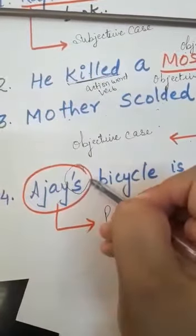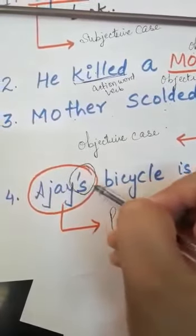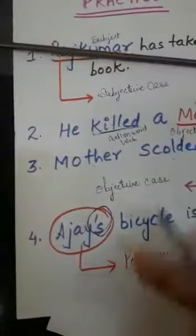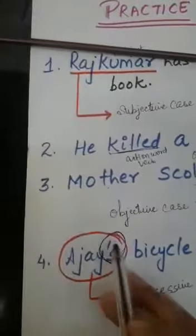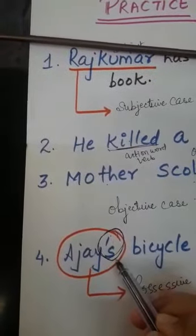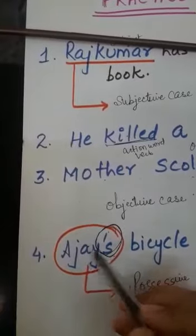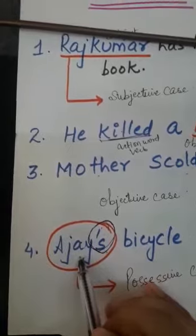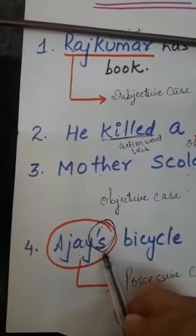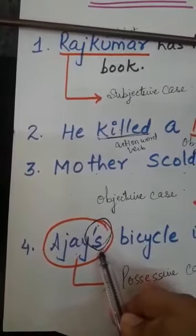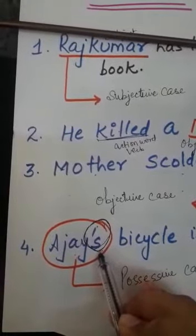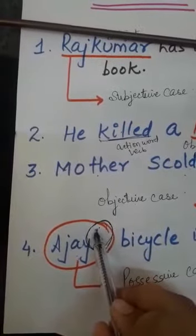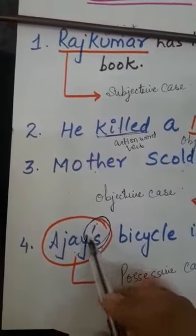One thing you have noticed: in the possessive case, the possessive form is formed by adding an apostrophe followed by s to the noun. To the noun, we add apostrophe and then s to form the possessive form.